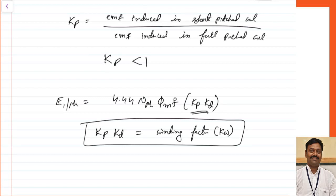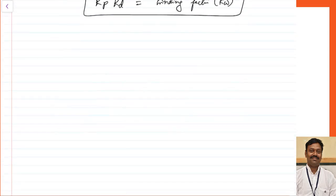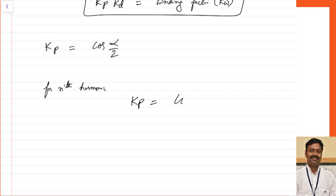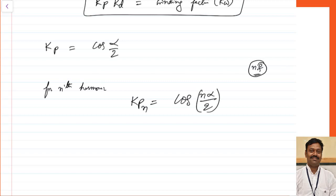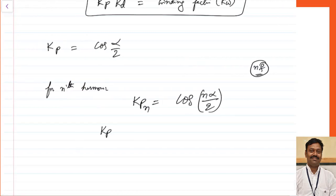The pitch factor Kp is defined as cos(α/2). For the nth harmonic, the value of Kp will be cos(n·α/2), because the nth harmonic rotates at n times the frequency — within 180 degrees the fundamental completes one half-cycle while the nth harmonic completes n half-cycles, so the cording angle becomes n times. We can tell that the cording factor for the fundamental component will be greater than for the 5th harmonic, which will be greater than for the 7th harmonic.